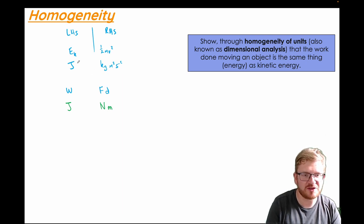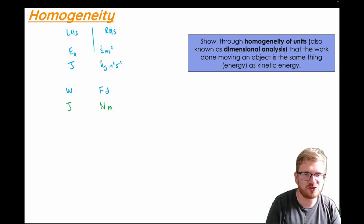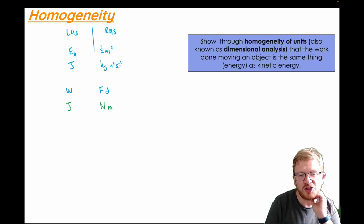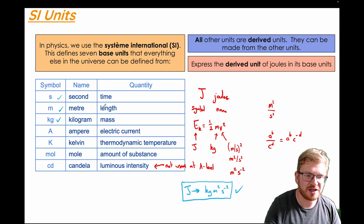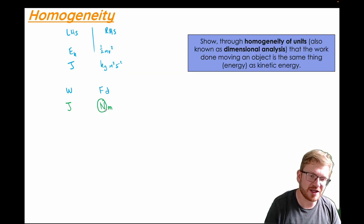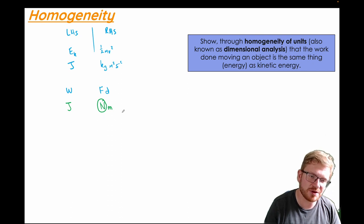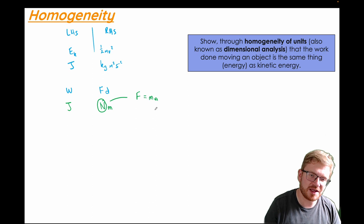I haven't yet shown these are the same, because joules in base units should be kilogram metres squared per second squared. Newtons are not on our base units list, so I need to rewrite newtons. A newton is a unit of force, and force equals mass times acceleration. In base units, mass is in kilograms and acceleration is in metres per second squared.